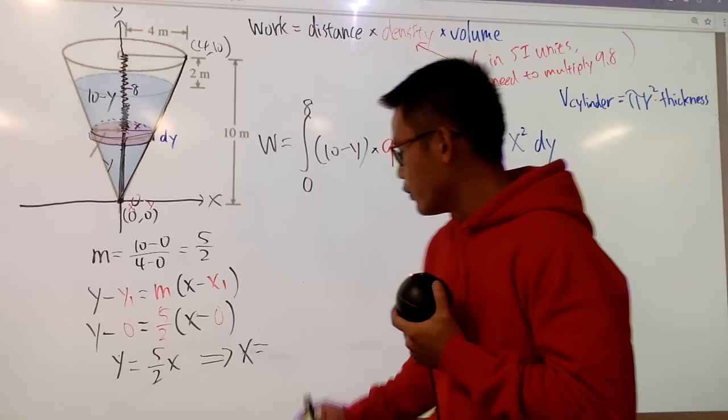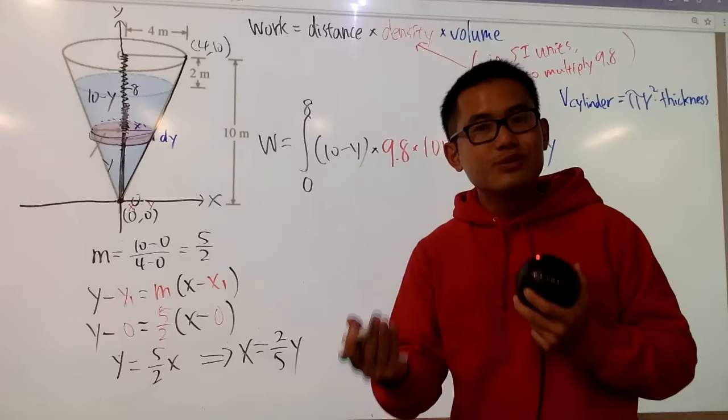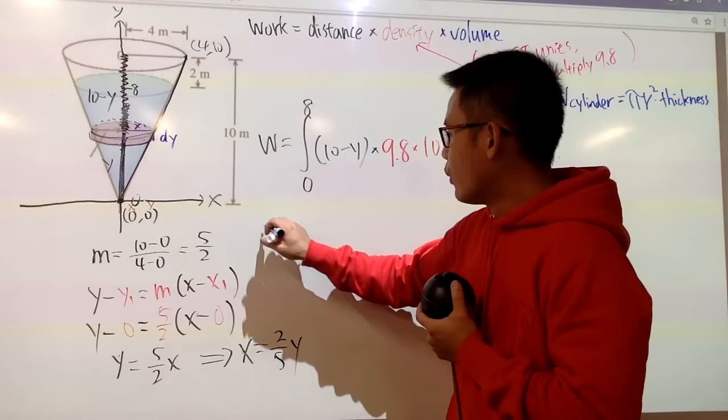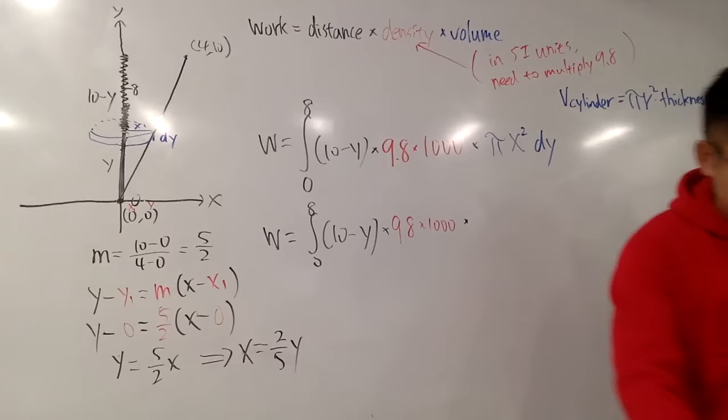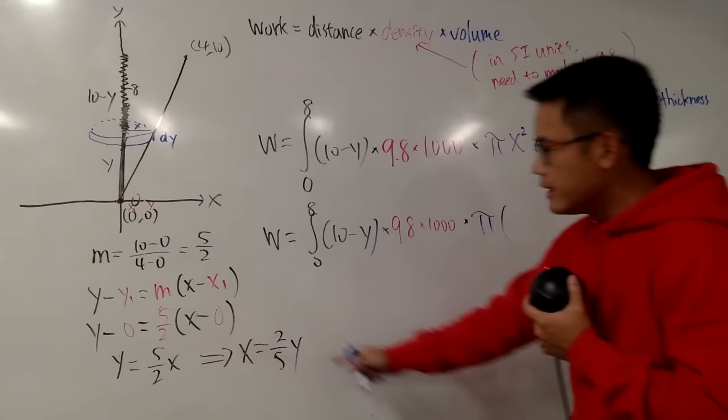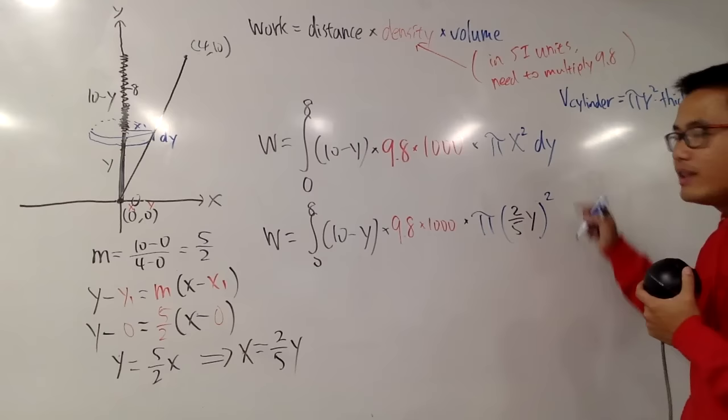And now, I will just have to plug in this into this x, and I will be done for the set, and you guys will do the work of, you know, maybe use a calculator, or do it by hand. Anyway, work is equal to from 0 to 8, 10 minus y, times 9.8 times 1000, and then multiply by, we have the pi, it's still pi, and then for the x, we are going to open the parentheses, and put this in, which is 2 over 5y, and then square that, at the end, we of course have this dy. This integral will calculate the work for you, but you also have to do the work on your own, to figure out the value for this.